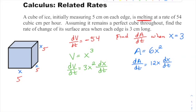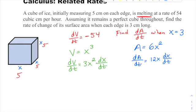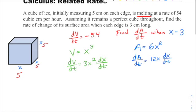Don't forget - with implicit differentiation, don't forget to multiply by d-whatever/dt, unless your variable is t. Now, dV/dt is always negative 54. I'm talking about the moment when x is 3, so I can plug that in. I can find what dx/dt is at that same moment when x is 3, then use it where I really want.